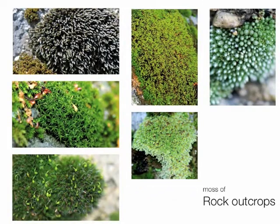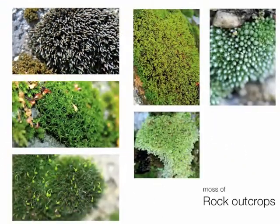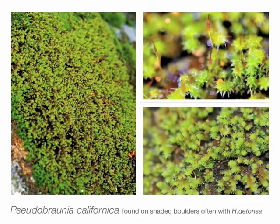While Hedwigia was found on the sides of boulders, our next moss is very common on the tops of boulders. This is Grimmia laevigata — it has long hair points giving it a characteristic look. Our next species has a similar branching pattern to Hedwigia detonsa, but opposed to the grayish color it has a greenish-brown color. That is Pseudobryum californica. It has this greenish color, is endemic to the western states, and is related to Hedwigia.